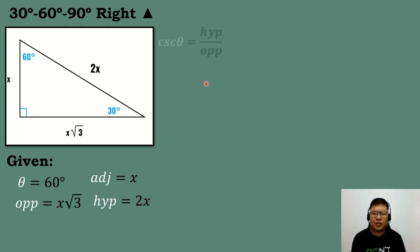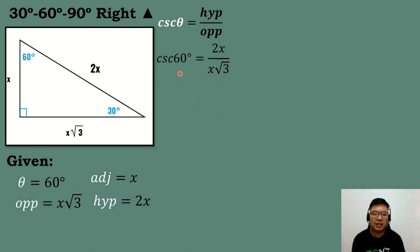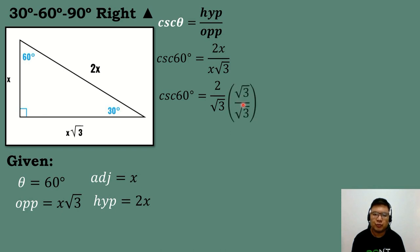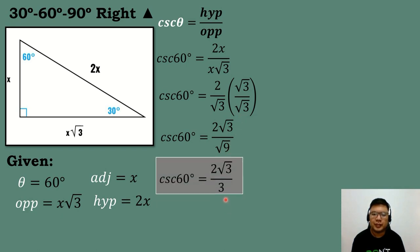Now let's solve for the next trigonometric function, which is cosecant theta. Cosecant theta is just the reciprocal of sine theta, so hypotenuse over opposite. Cosecant 60 degrees equals the hypotenuse 2x all over the opposite x square root of 3. Then 2x over x equals 2 over 1, giving 2 over square root of 3. Rationalizing by multiplying by square root of 3 over square root of 3: 2 times square root of 3 equals 2 square root of 3, and square root of 3 times square root of 3 equals square root of 9, which equals 3. So cosecant 60 degrees is equal to 2 square root of 3 over 3.